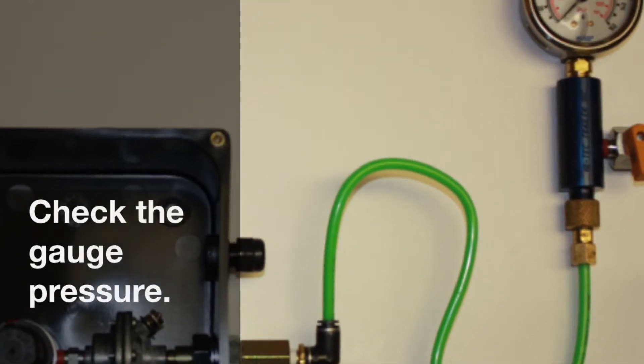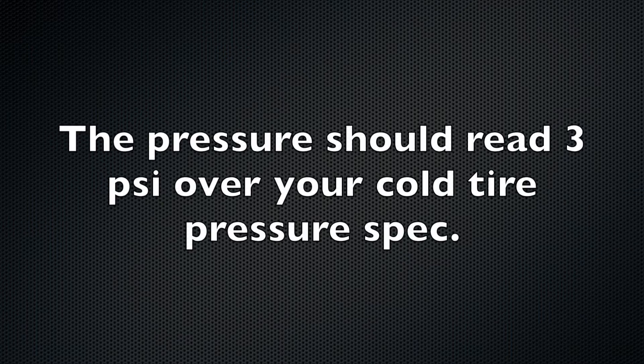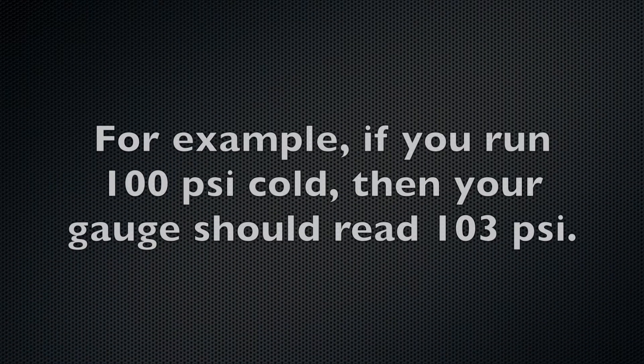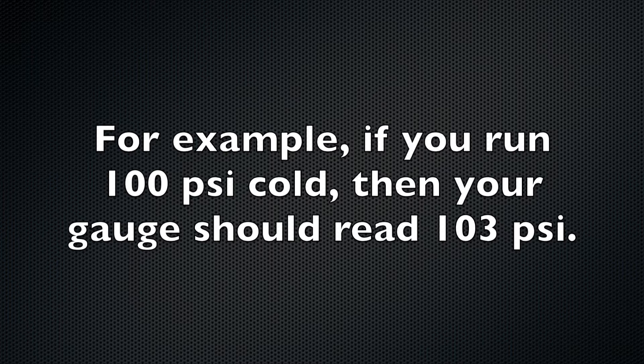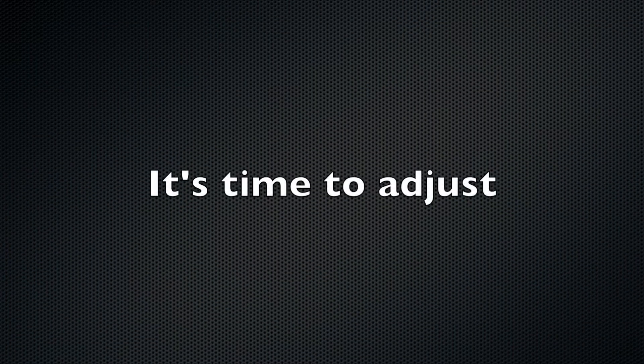Now check to see what the test gauge is reading. It should read 3 psi over your cold tire pressure spec. One example of this is if you're running 100 pounds cold, then your gauge should read 103. If the gauge does not read 3 psi over your cold tire pressure spec, it's time to adjust.